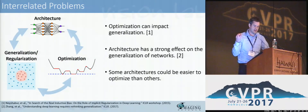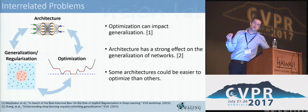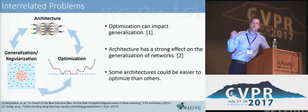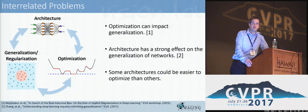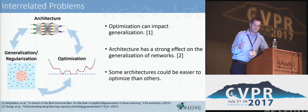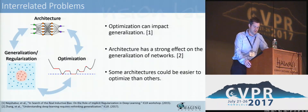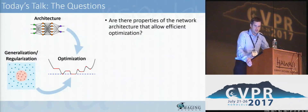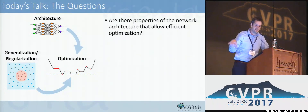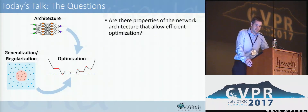It's been argued that the way you optimize neural networks can impact how well they will generalize. Likewise, changes in the architecture have been shown to have strong effects on how neural networks generalize. And perhaps certain architectures could be easier to optimize than others. In today's talk, we're going to primarily focus on the optimization corner of this triangle, but also touch briefly on some of these other areas.